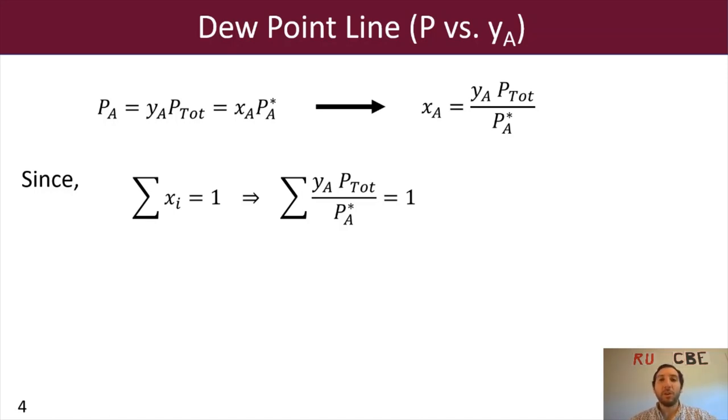And from there, we're going to rearrange this equation as well. And for this one, we're going to get something that looks a little different than what we saw before. Because this time around, we will have the sum of YI over PI star equals 1 over P total.